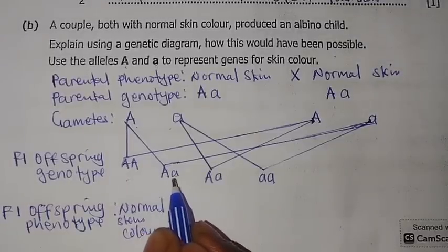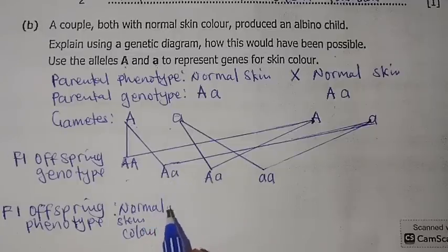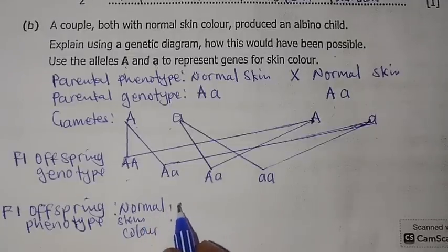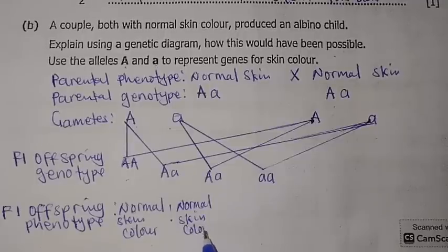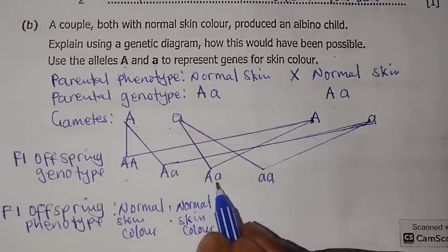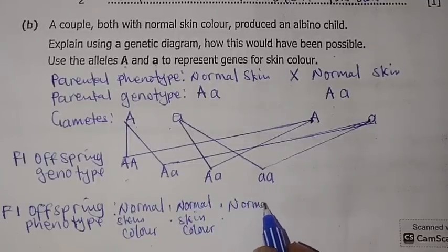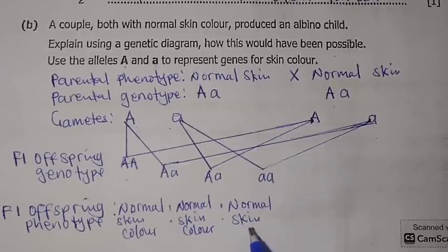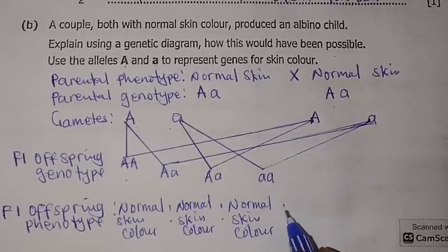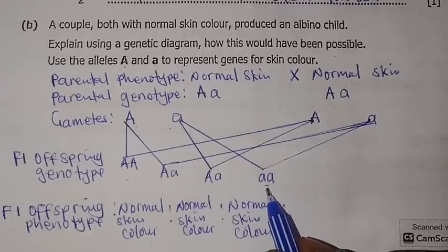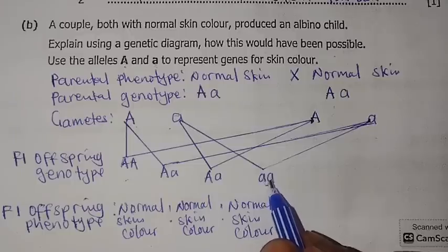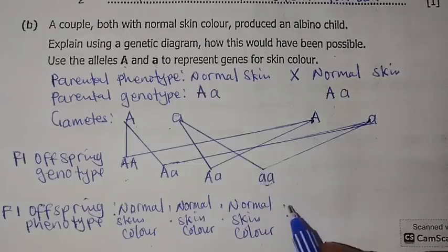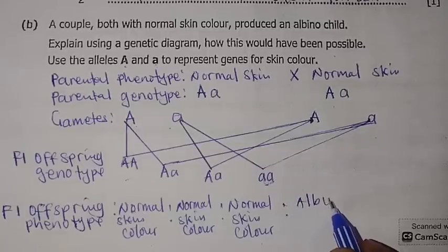The second offspring is heterozygous — one allele is dominant and one is recessive — so this one also has normal skin color but is a carrier. The third offspring is also heterozygous with normal skin color. The fourth offspring was homozygous recessive. Since small letter A represents a defective gene, this one is the albino child — skin color was not normal.